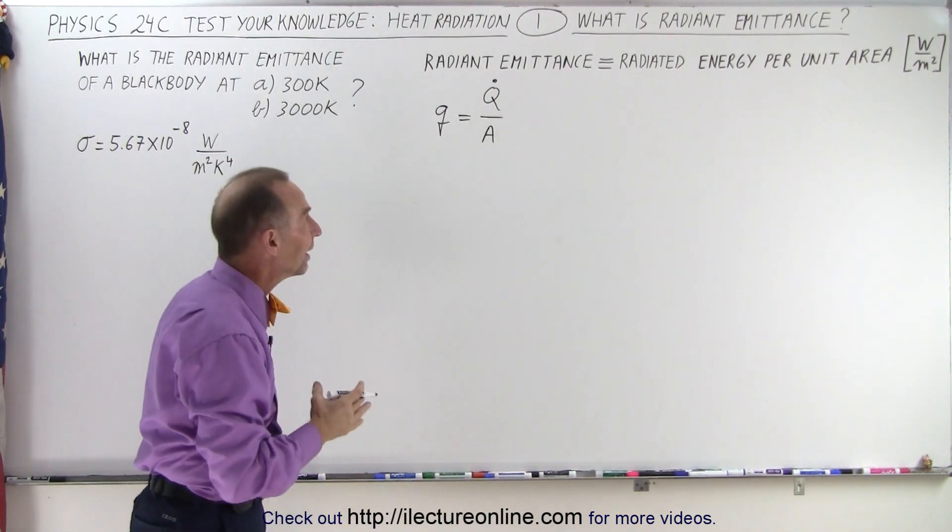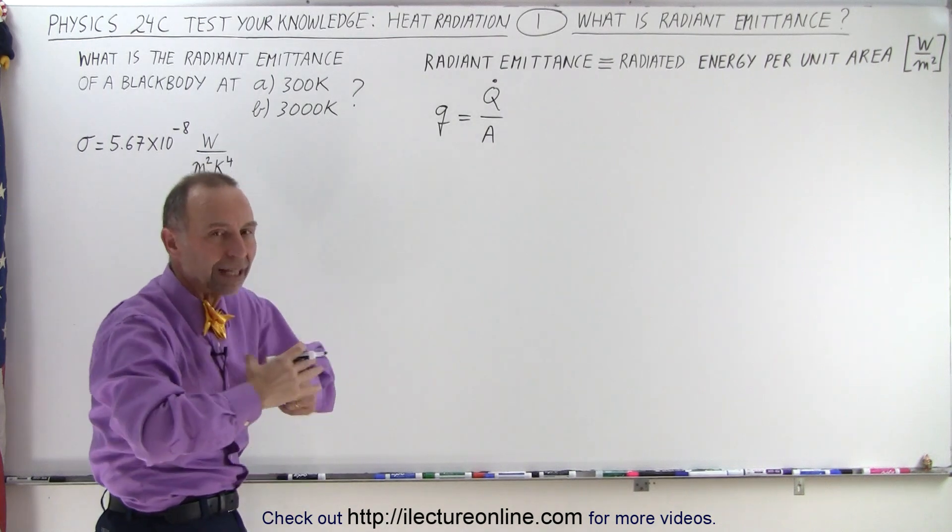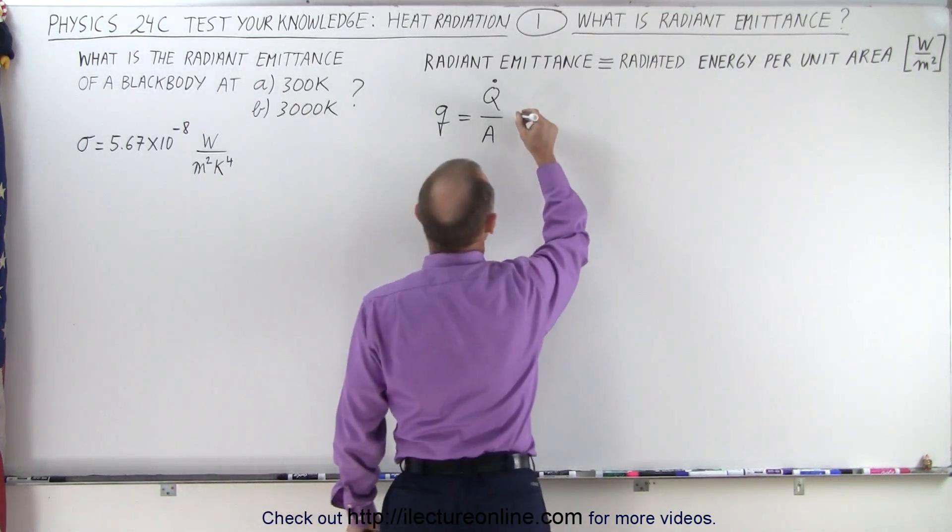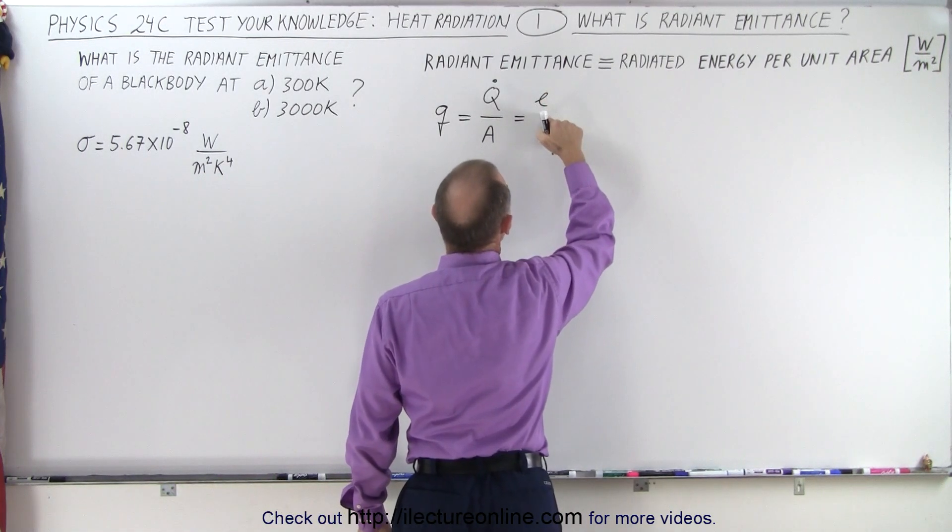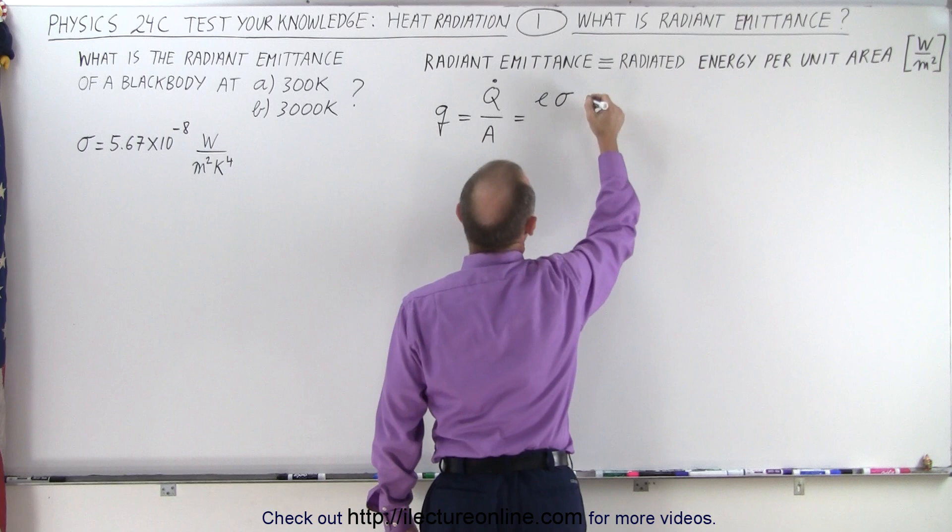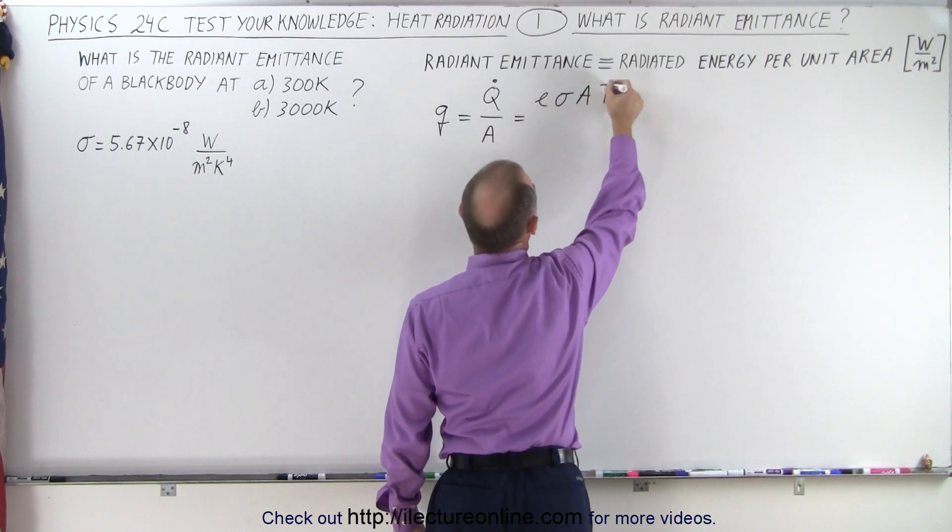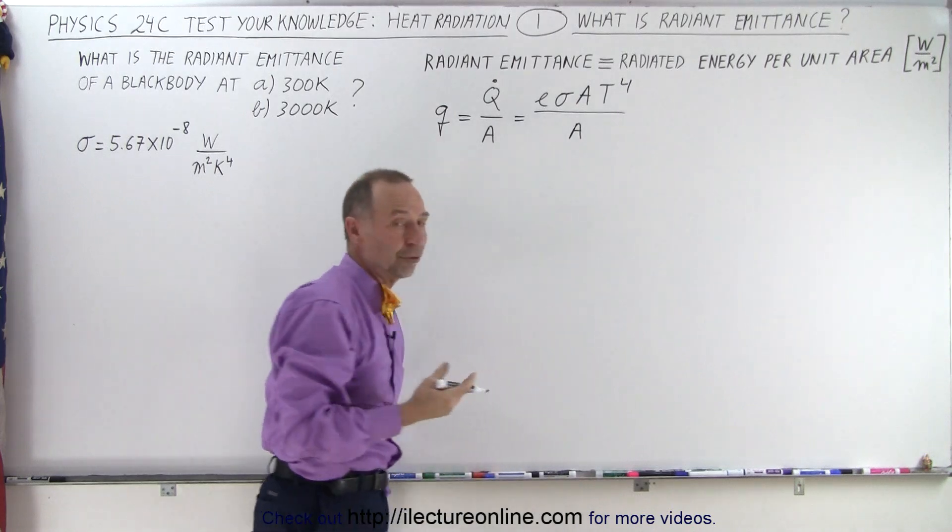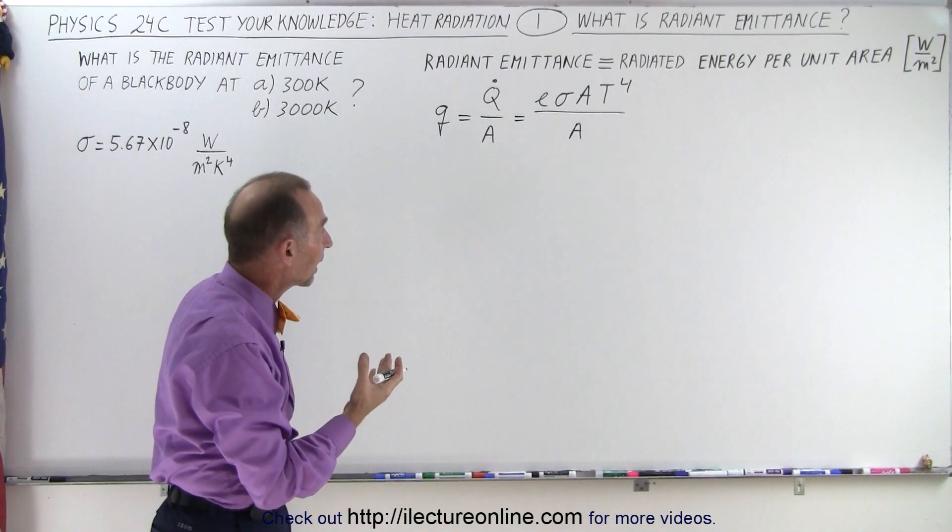Now Q dot is the amount of heat per unit area that's radiated from a radiating object. Using Stefan-Boltzmann's law, that would be equal to E, the emissivity constant, times sigma times the area times temperature to the fourth power all divided by the area. Notice that the areas will cancel out.